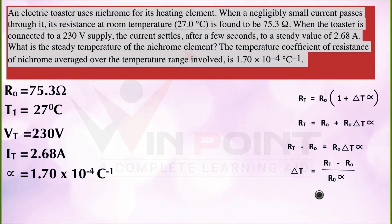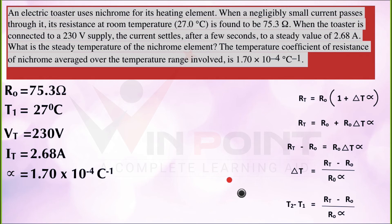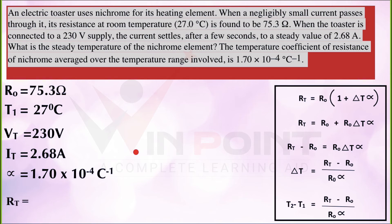We know R₀ = 75.3 and α = 1.70 × 10⁻⁴ °C⁻¹, but we don't know Rt directly. When voltage is increased to 230V, Rt is not given — instead Vt and It are given. According to Ohm's law we can find Rt. We also change ΔT into (T₂ − T₁), so the equation becomes: T₂ − T₁ = (Rt − R₀) / (R₀ · α), and we apply Rt = Vt / It.